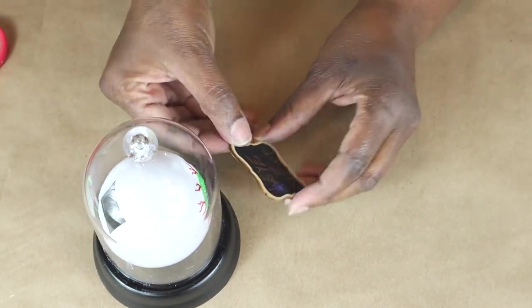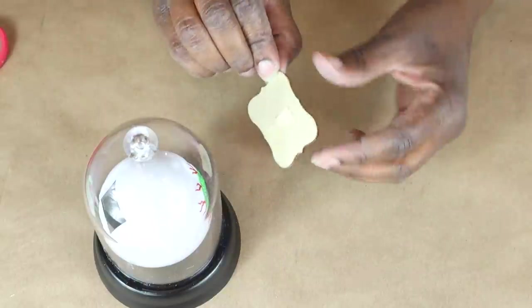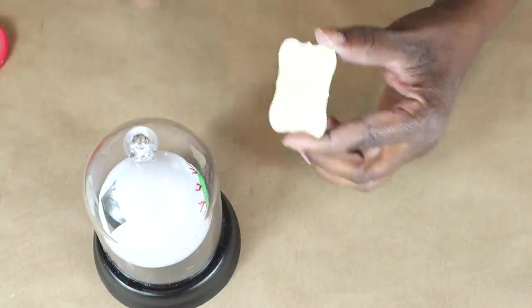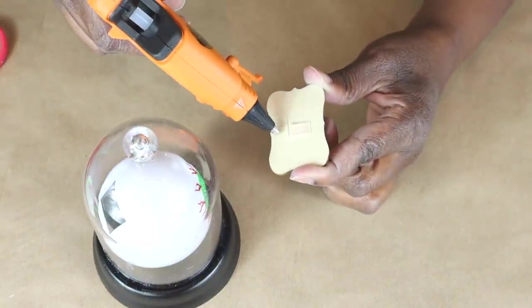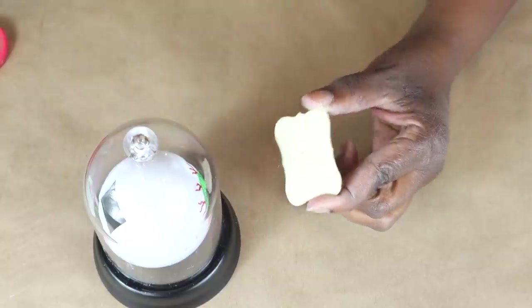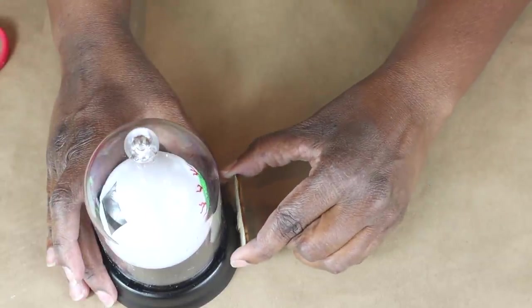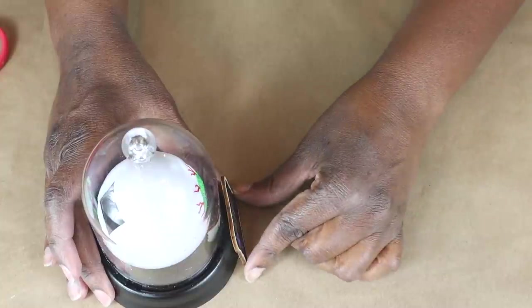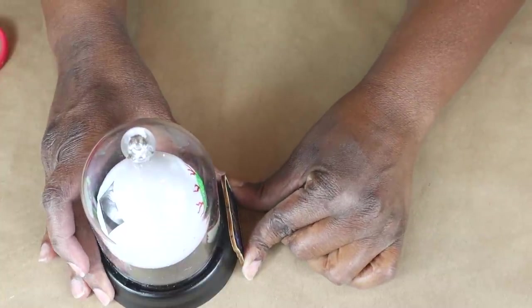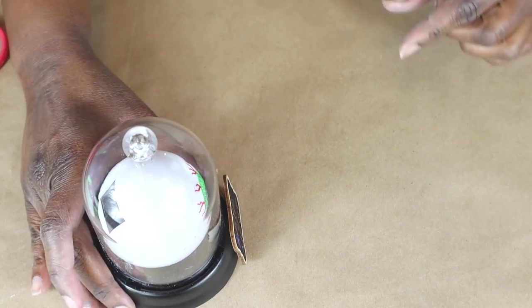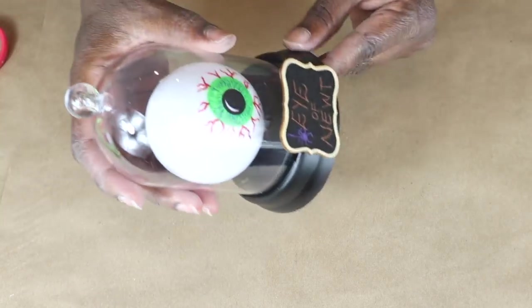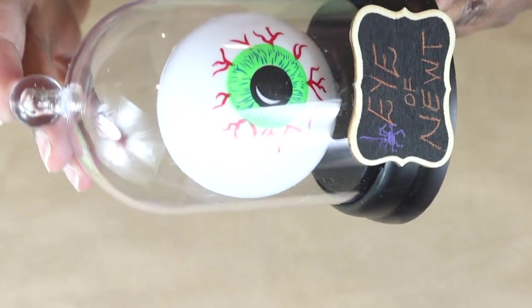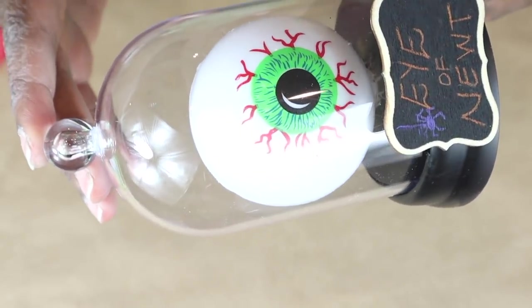I used one of the little chalkboard signs and wrote out eye of newt. And now we'll use a little bit of hot glue to hot glue it down to the base of the cloche. And that's how it turned out. It does light up as well.